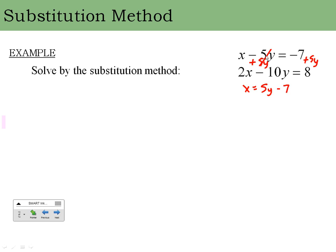That's easier than dividing, which could lead to mistakes. Now we have x equals 5y minus 7, so we plug that into the x in our second equation. We always plug into the equation we didn't already manipulate. So I substitute 5y minus 7 in place of x in the second equation.